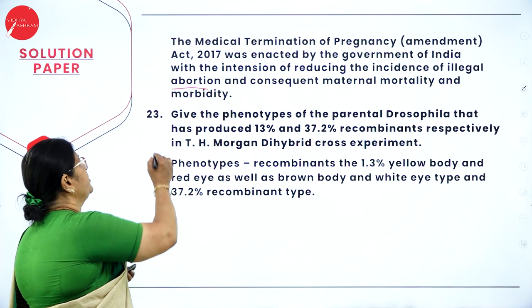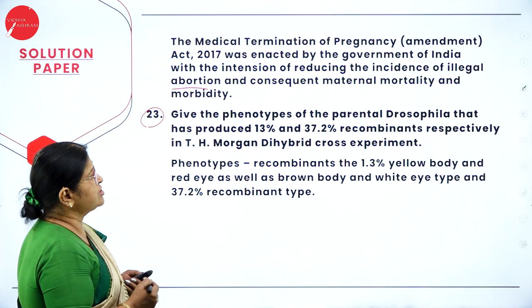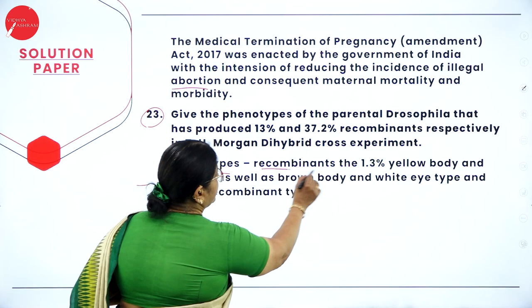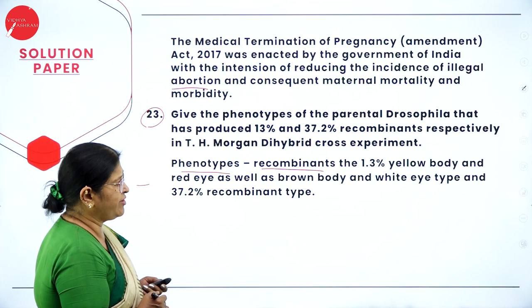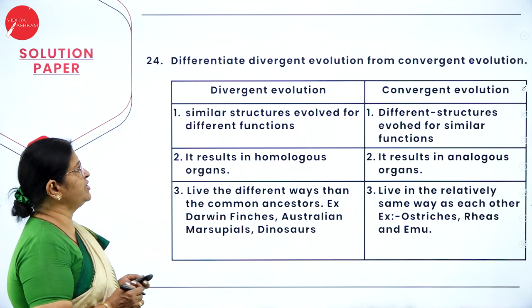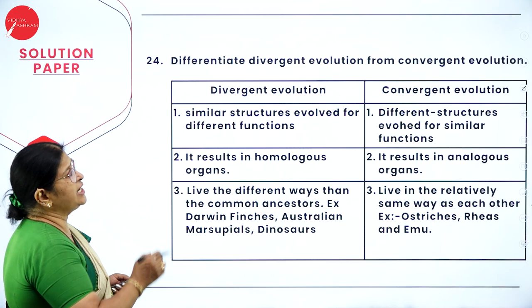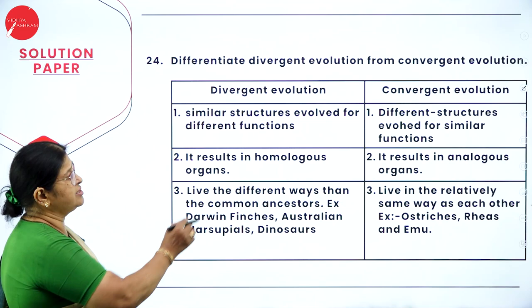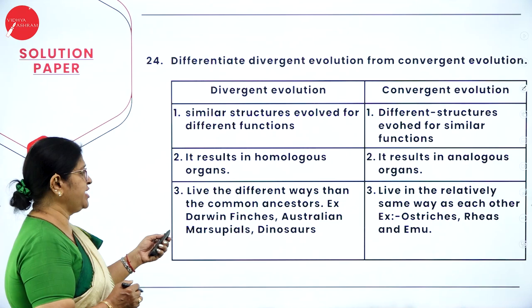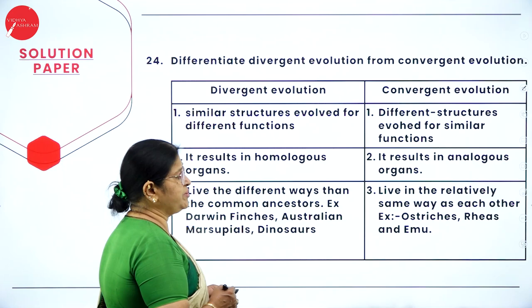Question 23: phenotypes of parental Drosophila — the 1.3% recombinants are yellow body and red-eyed type, and 37.2% recombinants are brown body and white-eyed type in T.H. Morgan's dihybrid cross. Question 24: divergent evolution — similar structures evolve for different functions, resulting in homologous organs (e.g., Darwin's finches, Australian marsupials). Convergent evolution — different structures evolve for similar functions, resulting in analogous organs (e.g., ostriches, Rhea, and emu).